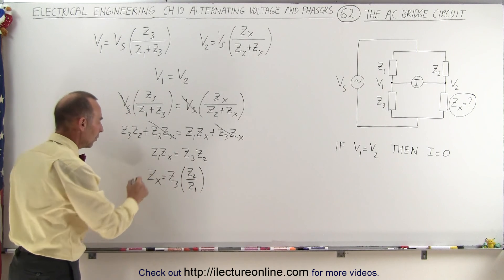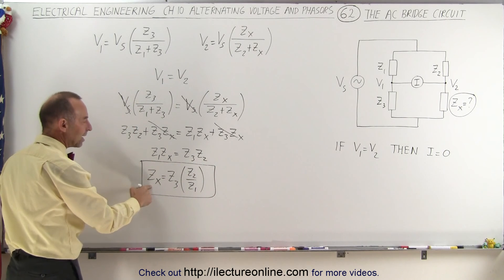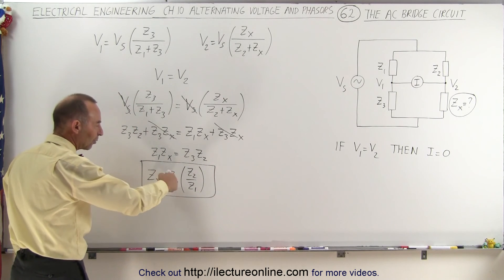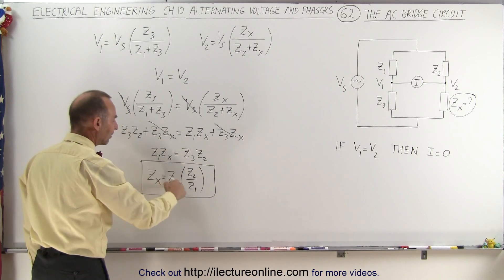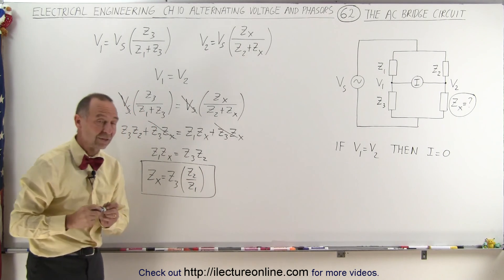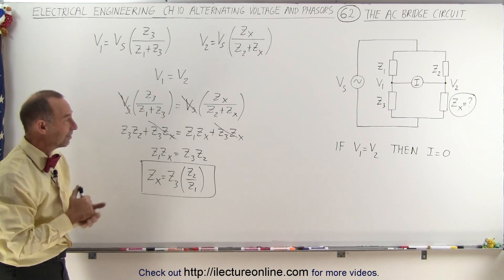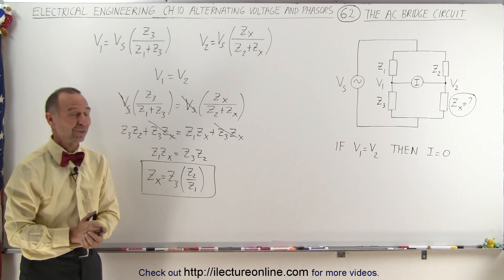We can find the value of unknown Zx by adjusting Z3 until current flow goes to zero, then multiply that Z3 value by the ratio of Z2 to Z1 to find Zx. That's how we use the AC bridge circuit. We'll show you some examples of how to use it as well.